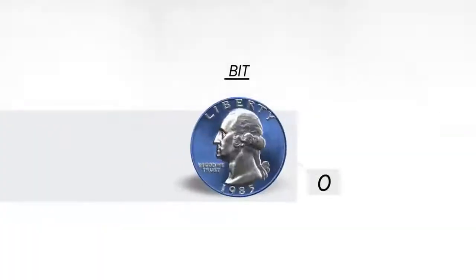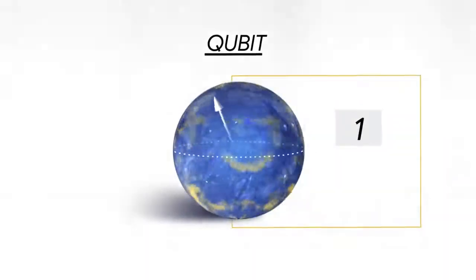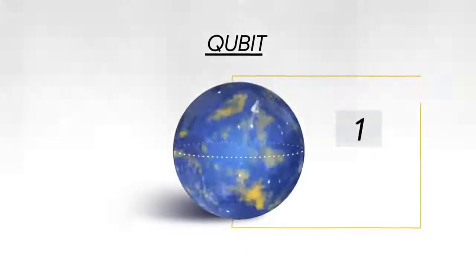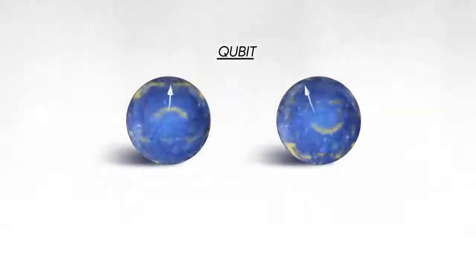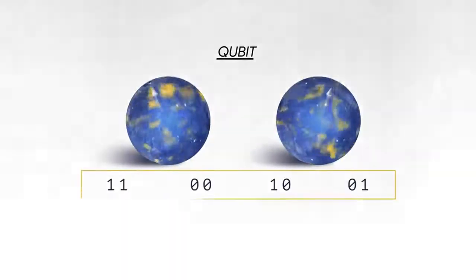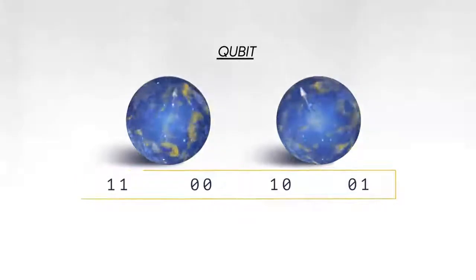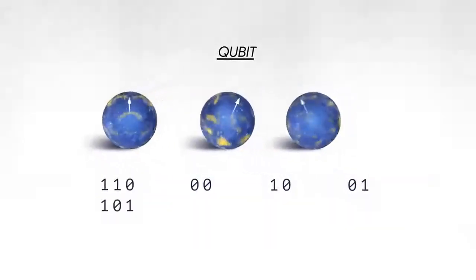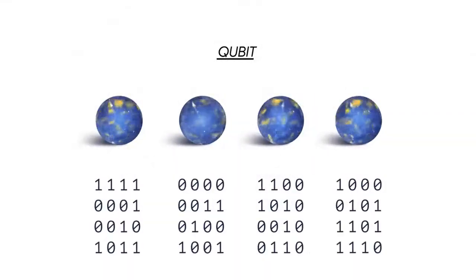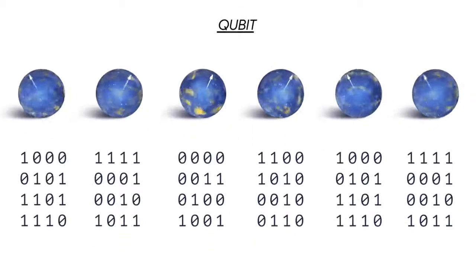The classical bit stores information as a zero or one, and a quantum bit can be both zero and one at the same time. If you have two quantum bits, then there are four possible states that you can put in superposition. With three qubits it's eight, four qubits it's 16 — it grows exponentially.